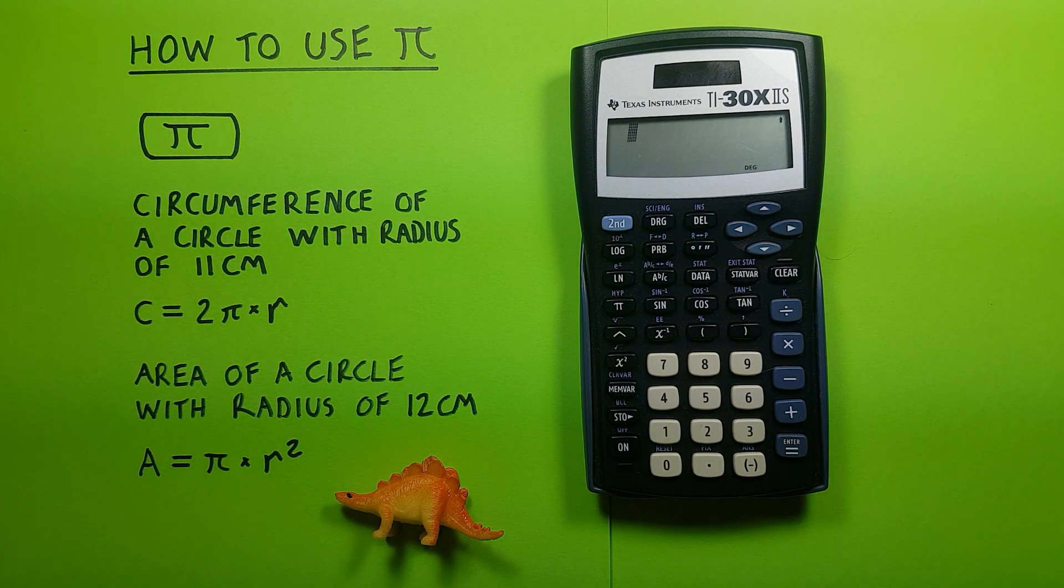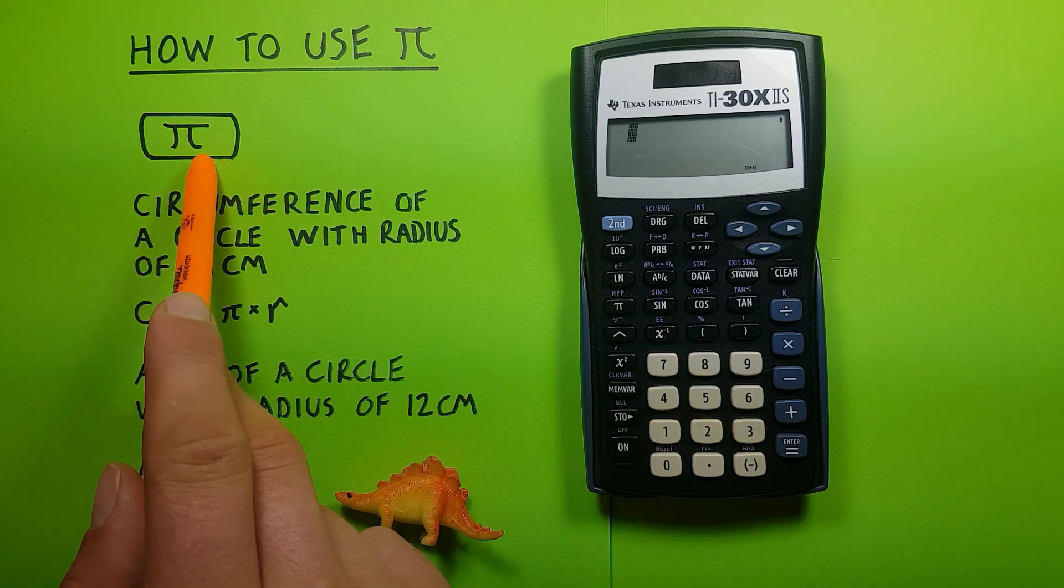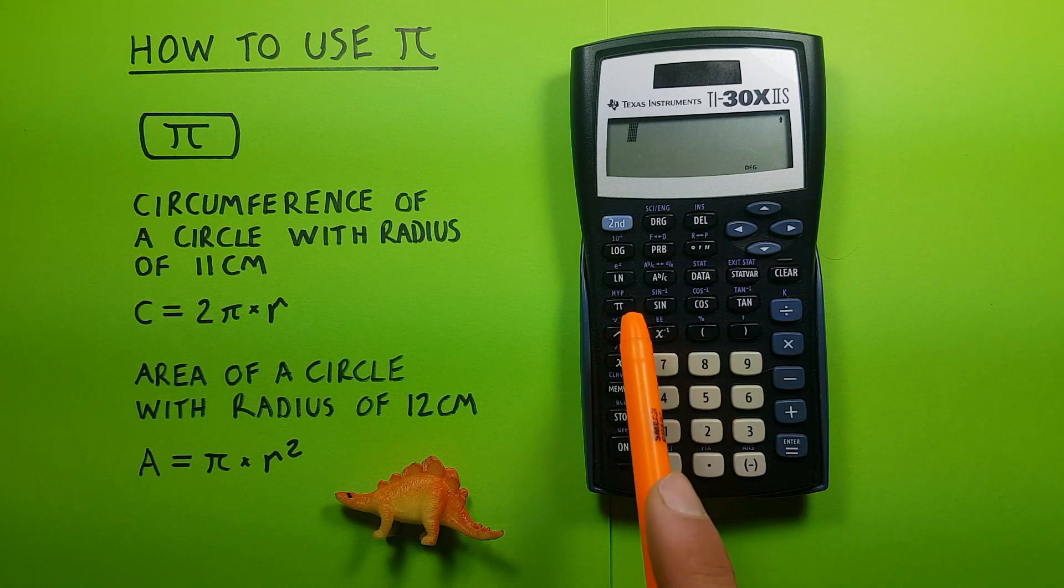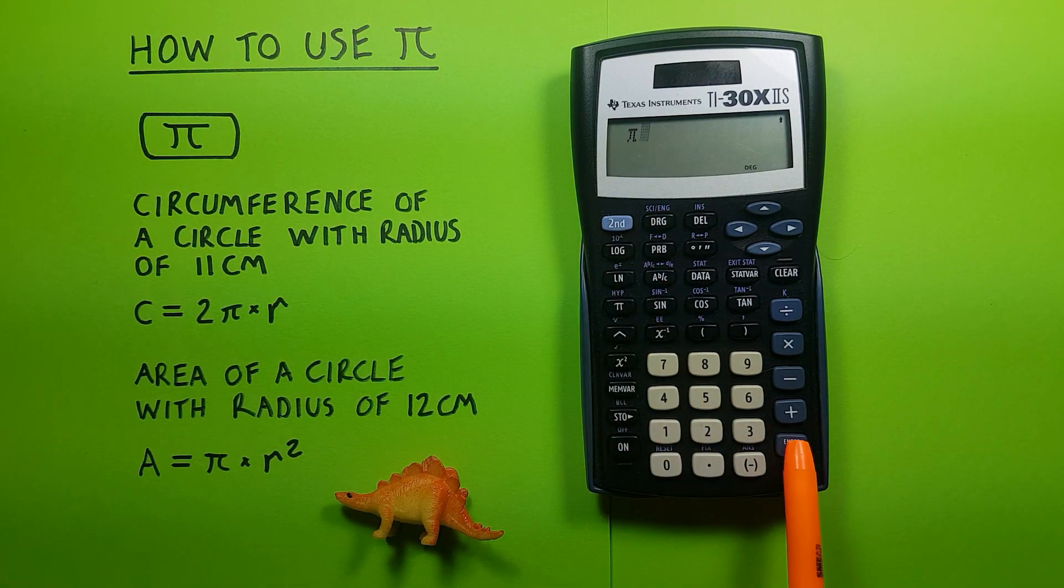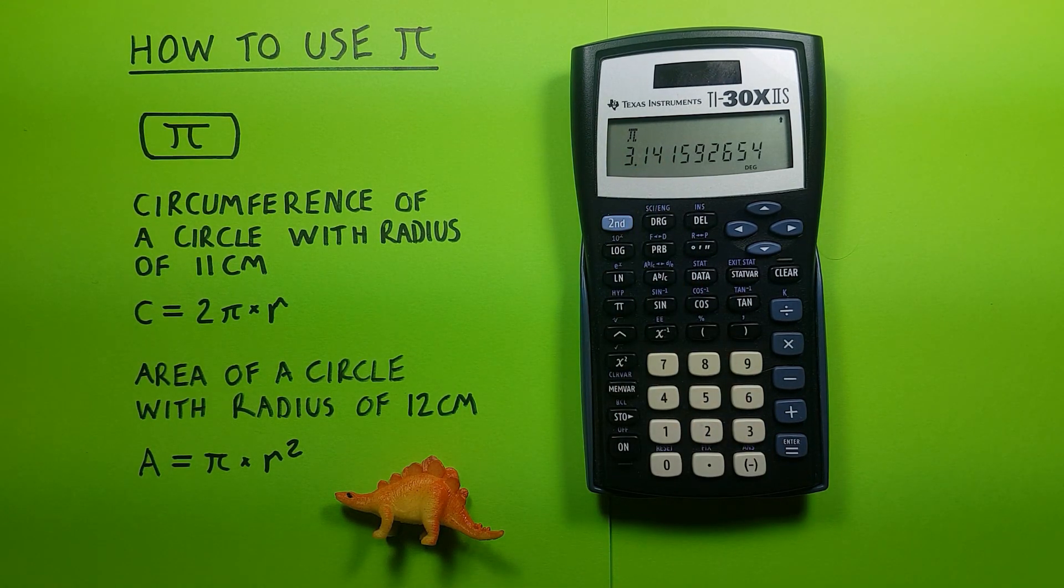To do that we'll be using the Pi key itself, located here, and looks like this. And when we press it, we see we get the Pi on the screen, and if we hit enter, that is equal to 3.1415 etc.